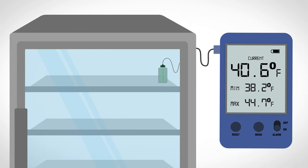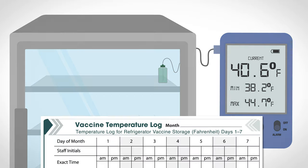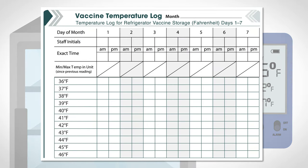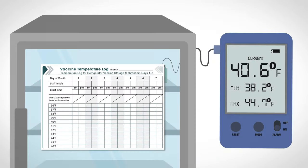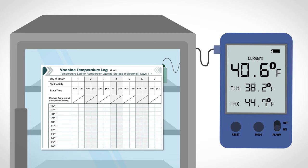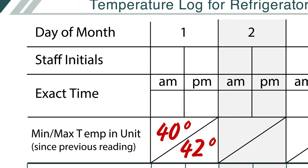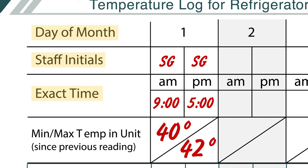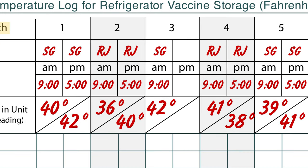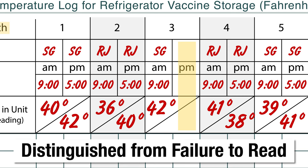Staff should check and document storage unit temperatures each workday. CDC has temperature logs you can use to record your storage unit temperatures. This log should be posted on the storage unit door or as close by as possible. If your temperature monitoring device does not display minimum and maximum temperatures, then the current temperature should be checked and recorded at least twice a day at the start and end of each workday. In addition to temperatures, record the date and time the reading was taken and the name of the staff person who did it. Do this each time the temperature is recorded. If you miss a reading, leave a blank entry in the log. Missed entries should be distinguished from entries where the monitoring device failed to display a reading.